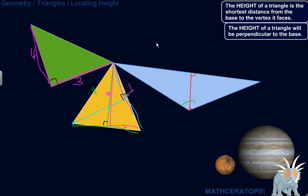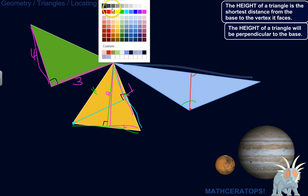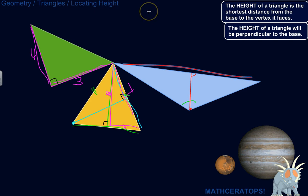Don't get caught up with the words base and height. You might think base means it's on the bottom, and you could flip the triangle around so it really is on the bottom — but it doesn't matter how it's oriented. You call any side the base, and once you call it the base, you connect that base to the vertex across from it with a line segment that is perpendicular to the base — meaning it's the shortest distance from the base to the vertex. And that is your height.